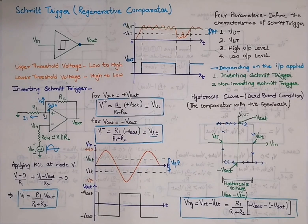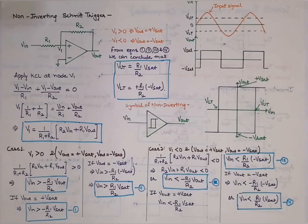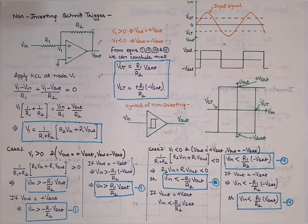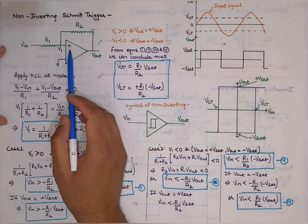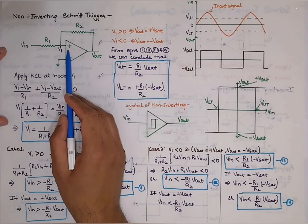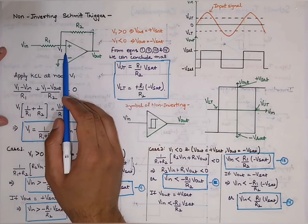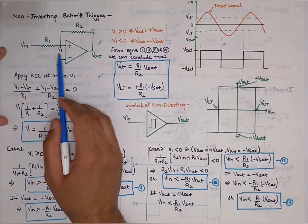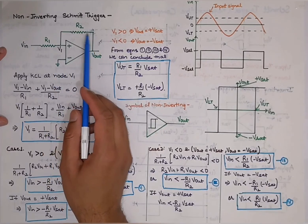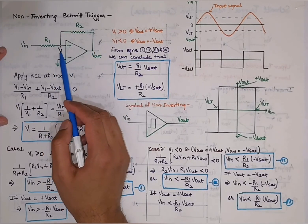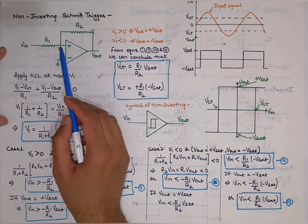Now next is the non-inverting Schmitt trigger. In the non-inverting Schmitt trigger, the input is applied at the non-inverting terminal. As you can see, the input is applied at the non-inverting terminal and the feedback is also connected to the non-inverting terminal.